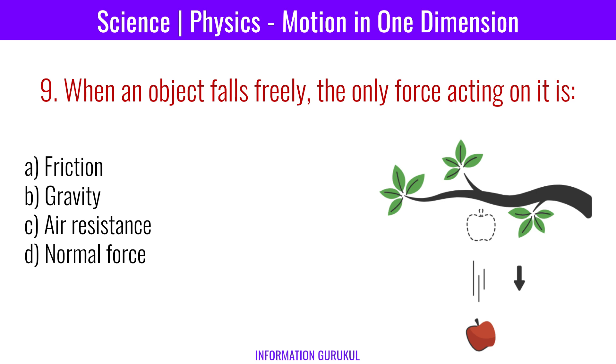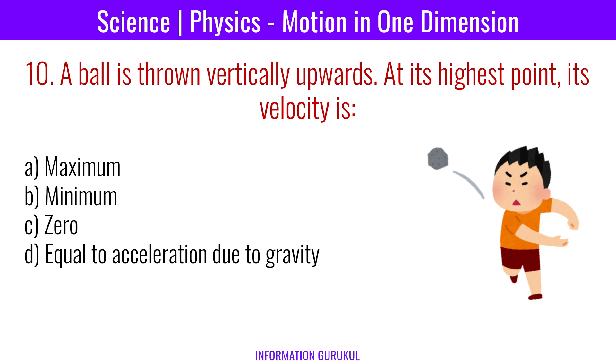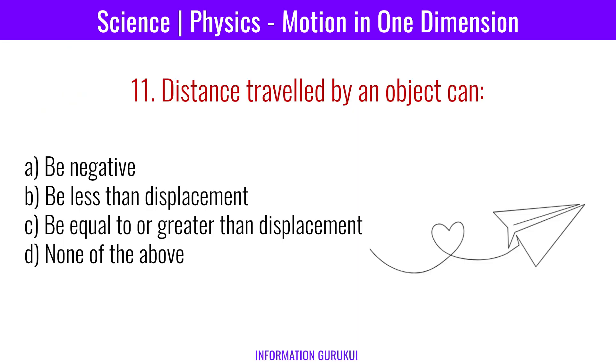When an object falls freely, the only force acting on it is gravity. A ball is thrown vertically upwards; at its highest point, its velocity is zero. Distance traveled by an object can be equal to or greater than displacement.